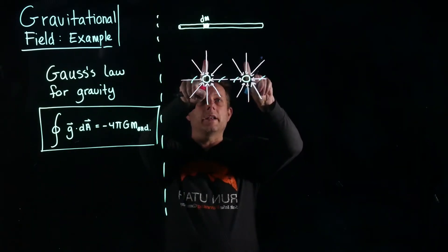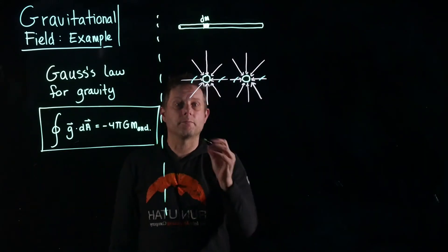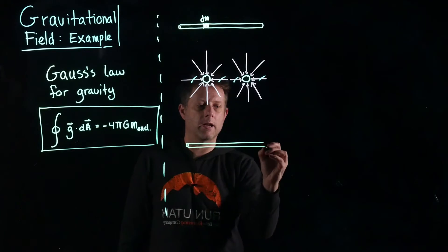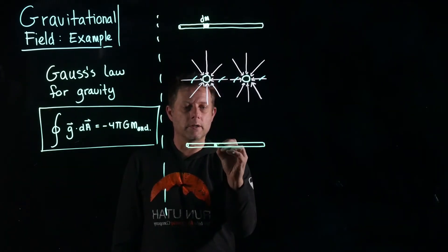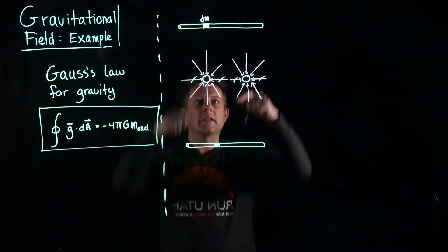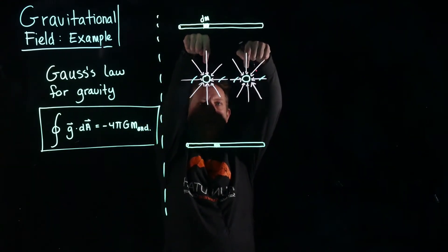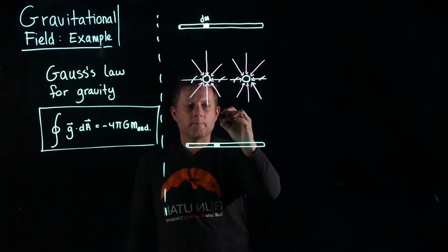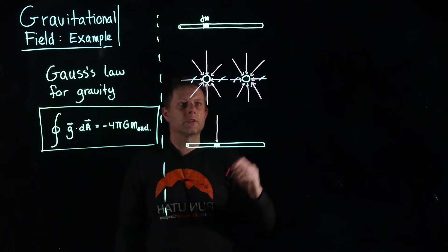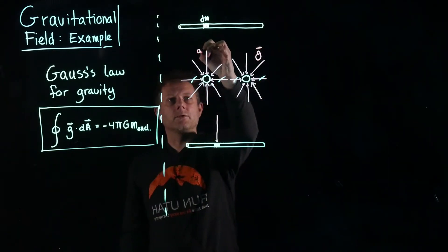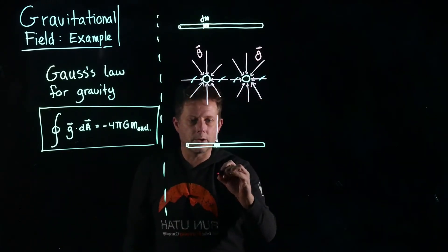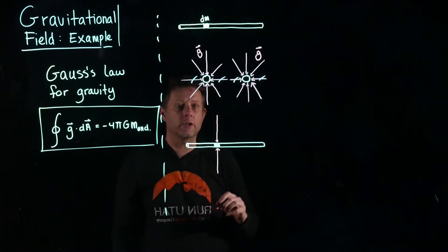These two components, on the other hand, will add together. Looking at two elements that are just really close together, the two field components pointing down have the same strength and same direction, so they add up to a net field directed down. That is the gravitational field of these two combined. Similarly, these two are going to add up to a field pointing towards the mass elements.